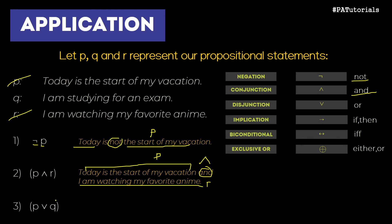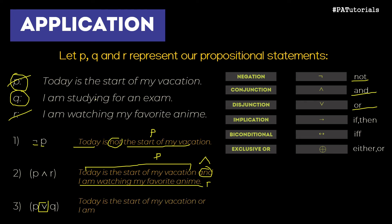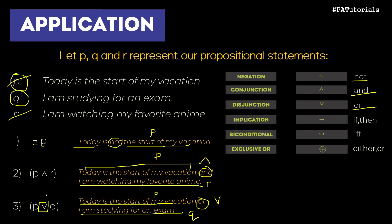Now let's try the next example with P or Q. We have two variables: P and Q. This time the operator is disjunction, translated as 'or.' Combining them gives us: 'Today is the start of my vacation OR I am studying for an exam.' The 'or' symbol is placed between the two sentences.